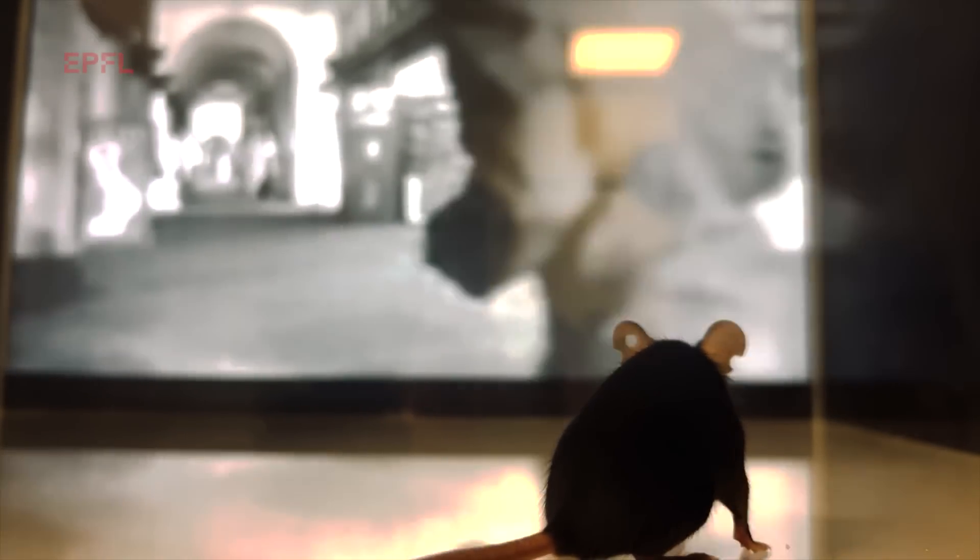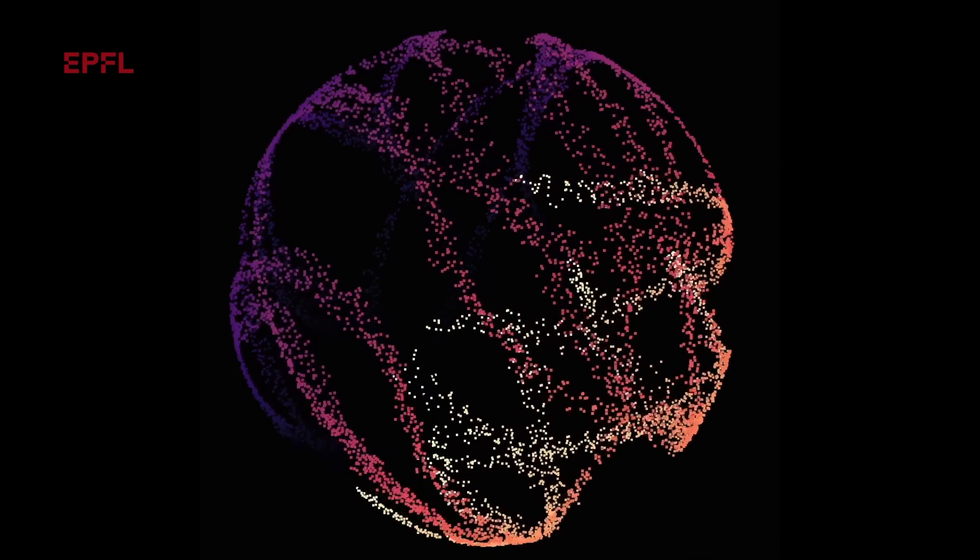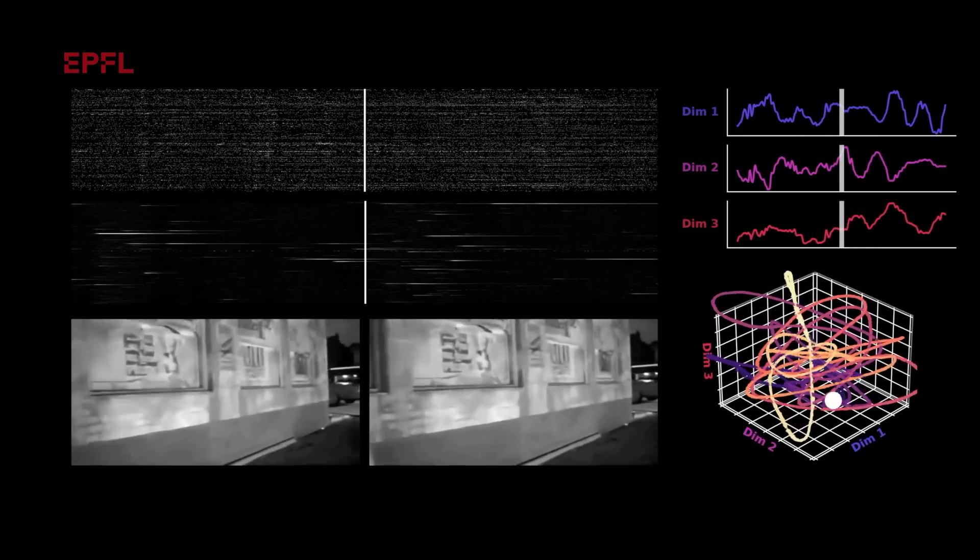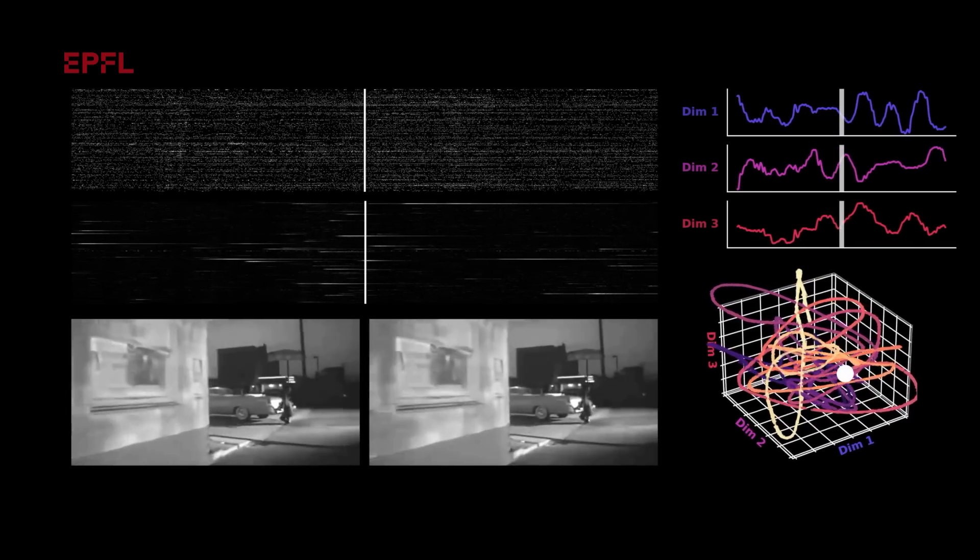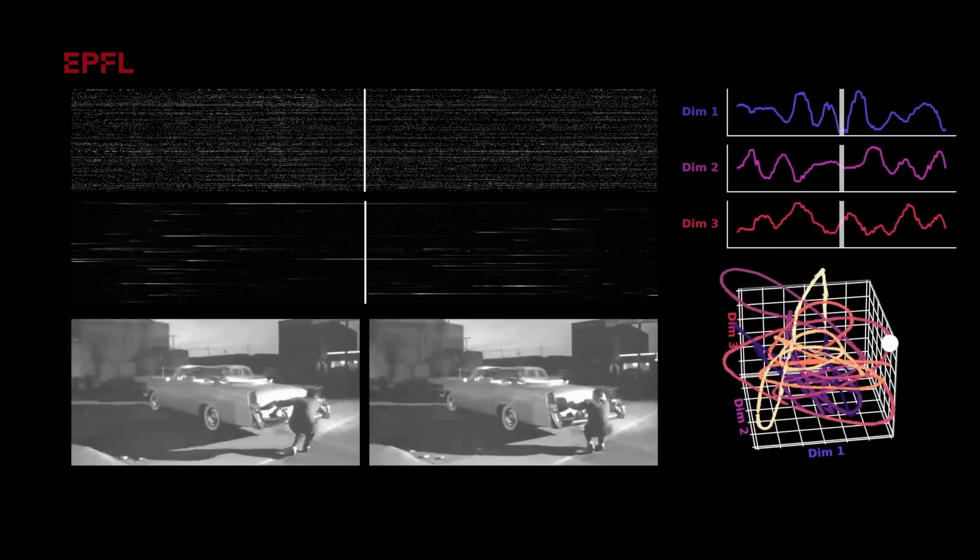We can take these genetically engineered mice and record from their brain while they watch these movies. You can do this for many mice and use that as training data to train the base algorithm in Zebra. Then you can take a new mouse whose neural data we've never seen, run this through the algorithm, and it can predict which frame the mouse is actually watching.